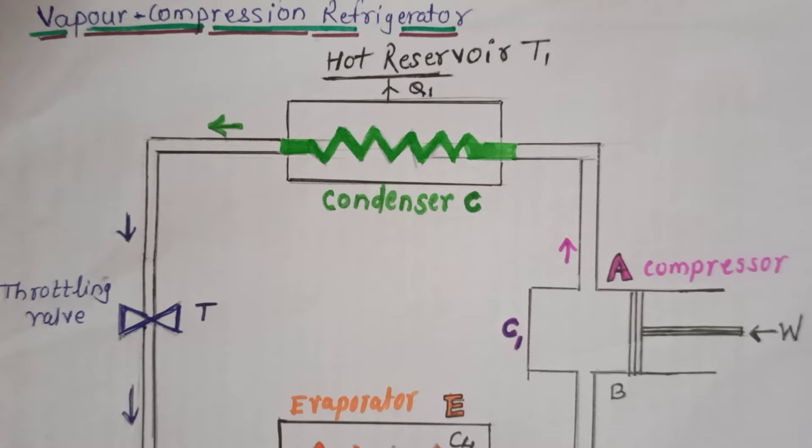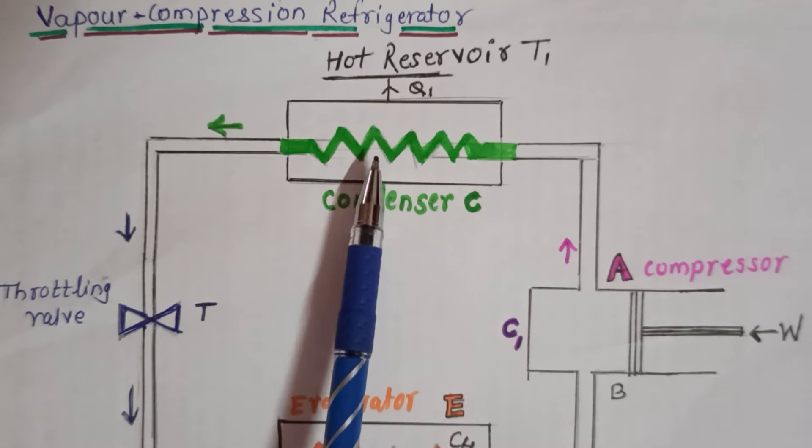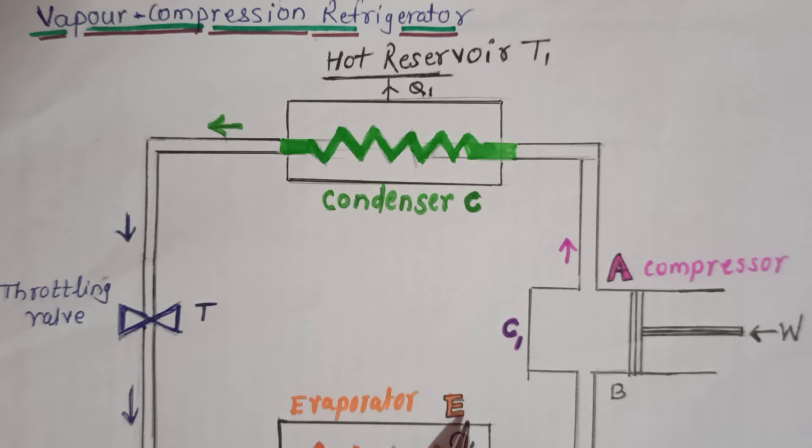It consists of three parts: First, compressor C1. Second, condenser C. And third, evaporator E.